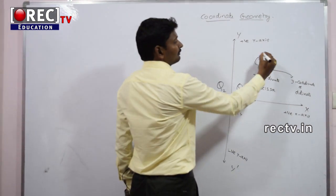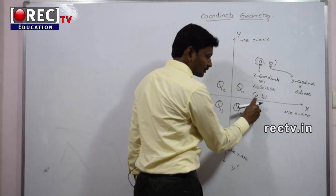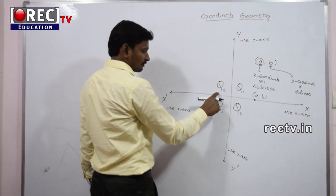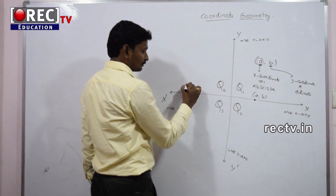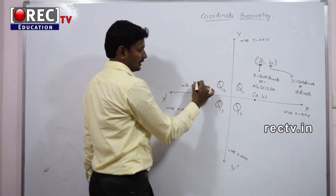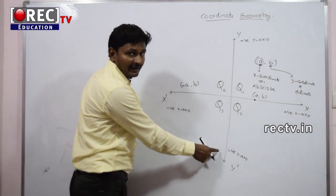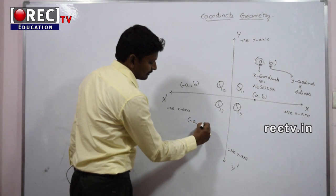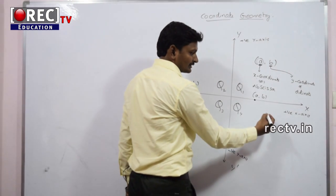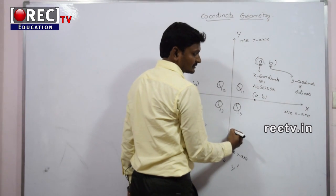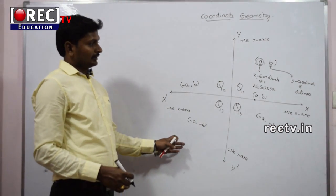The point which lies in the first quadrant is of the form (A, B), meaning both X coordinate and Y coordinate are positive. In the second quadrant, the X axis is negative, so the general form is (−A, B). In the third quadrant, both X and Y are negative, so the form is (−A, −B). And in the fourth quadrant, X is positive and Y is negative, giving the form (A, −B). These are the general forms of points lying in each quadrant.